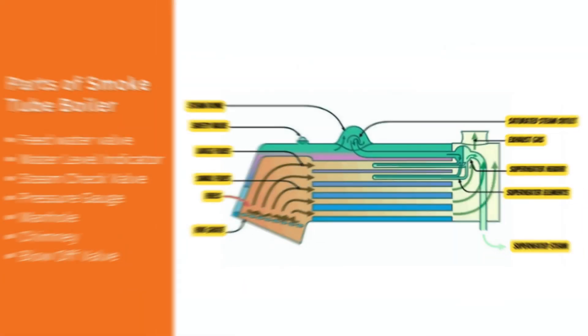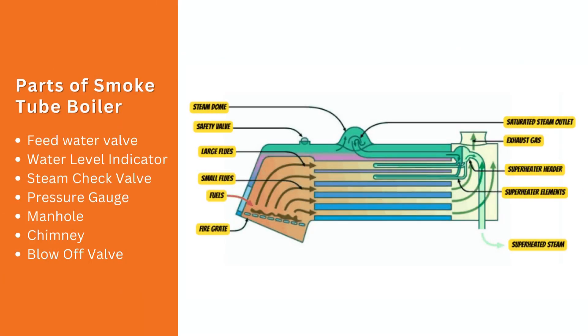Now let's learn about the various parts of a smoke tube boiler. Starting with the feed water valve — it controls water intake and prevents leaks. The water level indicator displays and regulates water levels.